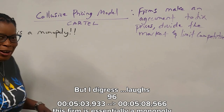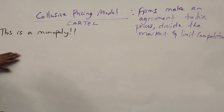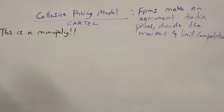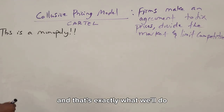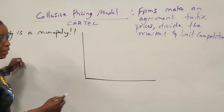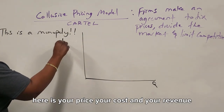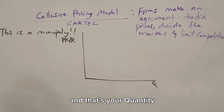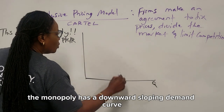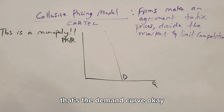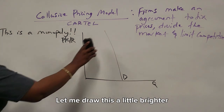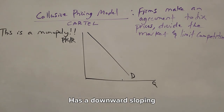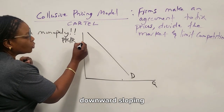This collusive pricing model is essentially a monopoly. So if you want to use the board to see what it looks like graphically, all we have to do is show the graph for a monopoly. Here is your quantity on the horizontal axis, and price, cost, and revenue on the vertical axis. The monopoly has a downward sloping demand curve — let me draw that in brighter. Because demand is downward sloping, so is marginal revenue.